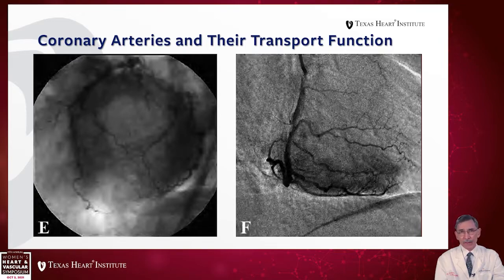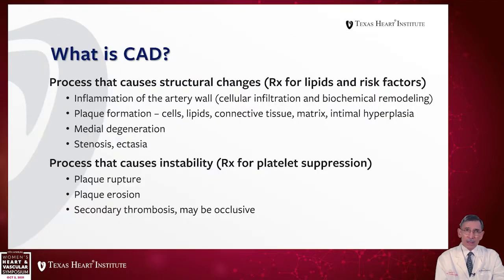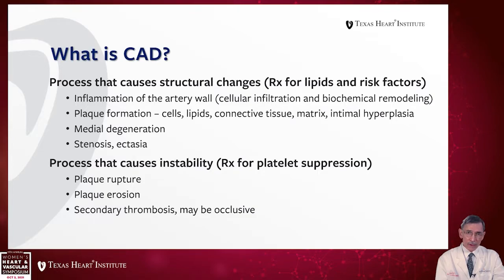I also want to remind us about the function of the coronary arteries — they are conduit arteries. Here you'll see sample arteriograms showing the dark blush of contrast that proceeds from the coronary artery into the myocardial blood vessels. Coronary artery disease is a process that causes structural changes, treated with lipid therapy and risk factor management. There's inflammation of the artery wall, plaque formation, medial degeneration, stenosis, and ectasia. It's also a process that causes instability of the thrombotic system, for which we treat with platelet suppressants. These unstable events can involve plaque rupture, plaque erosion, and secondary thrombosis that may be occlusive.